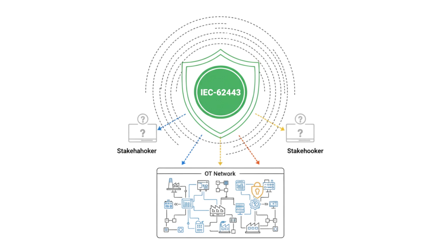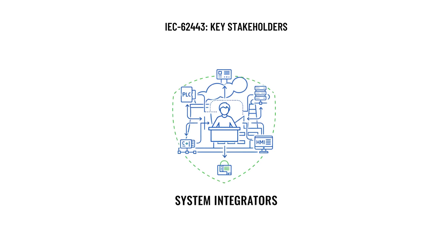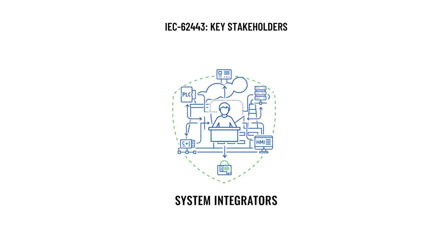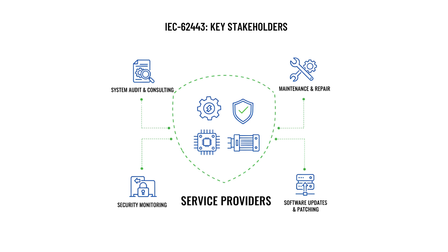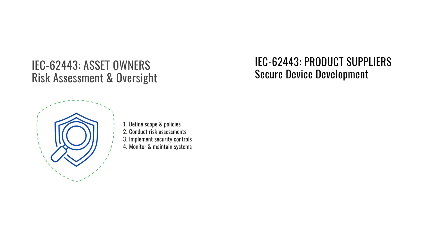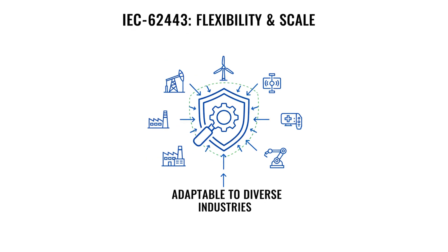IEC 62443 is divided into four main groups: asset owners, like power plants or manufacturing facilities; system integrators, those who design and implement control systems; product suppliers, companies that make industrial devices; and service providers, those who maintain these systems. Each group has specific responsibilities under the standard. For example, asset owners focus on risk assessment, while product suppliers ensure their devices meet security requirements. This division makes IEC 62443 flexible and scalable for different industries.